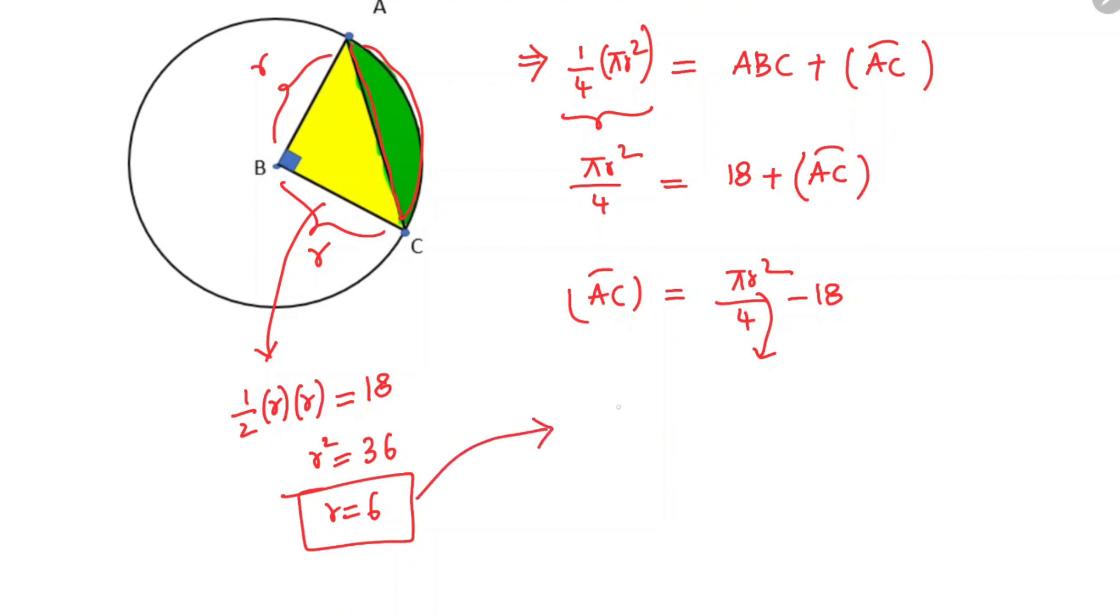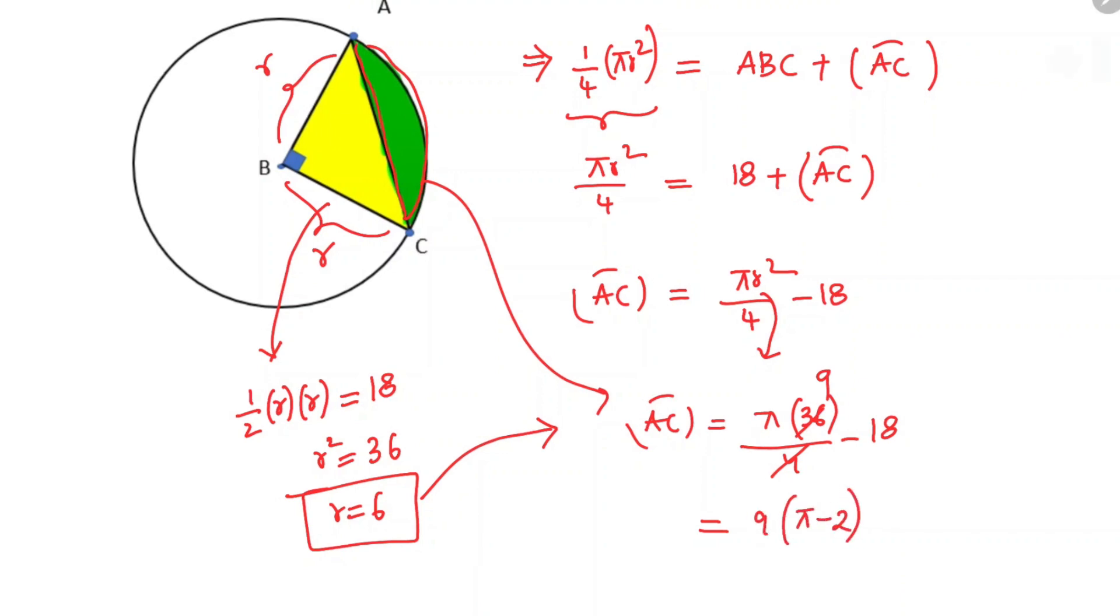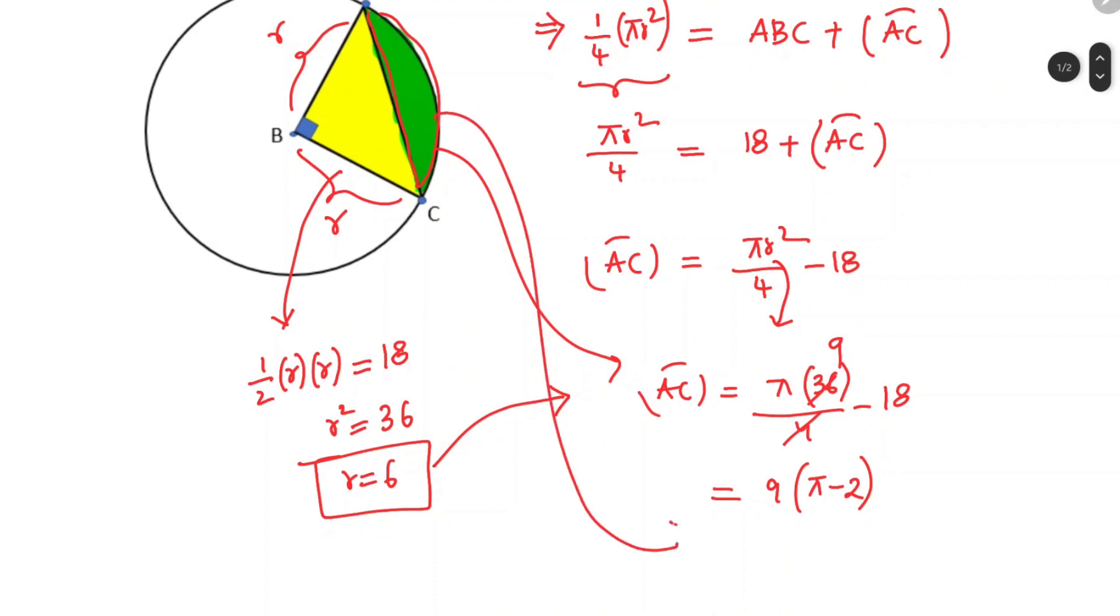Replacing it here we get the area of this green region AC as π times 36/4 minus 18 which will be equal to 9 times π minus 2. So the area of this green region will be equal to 9 times (π - 2) square units.